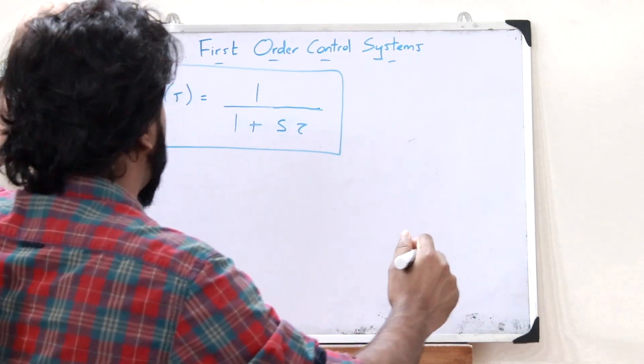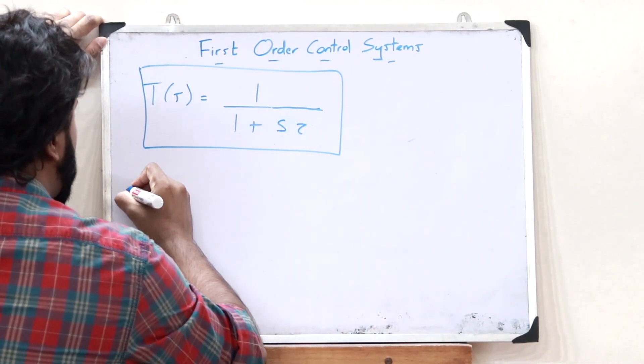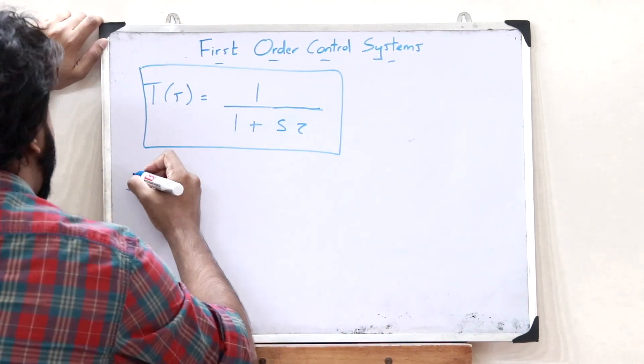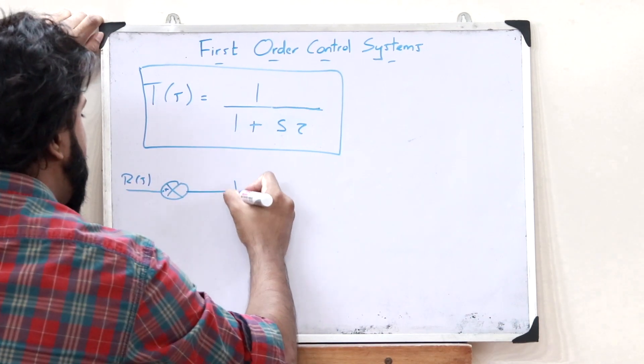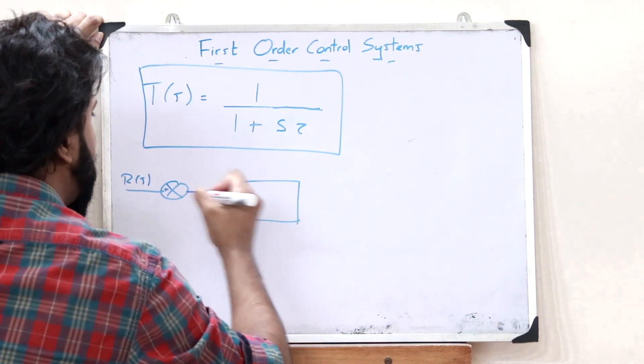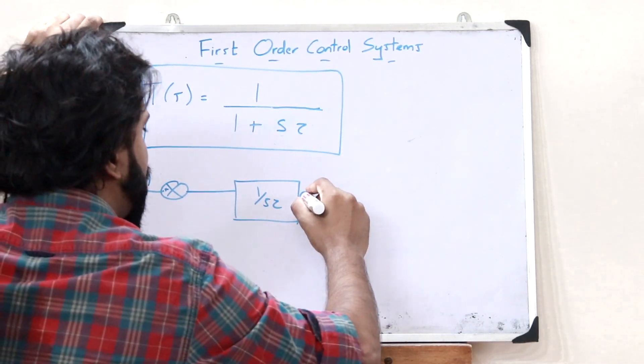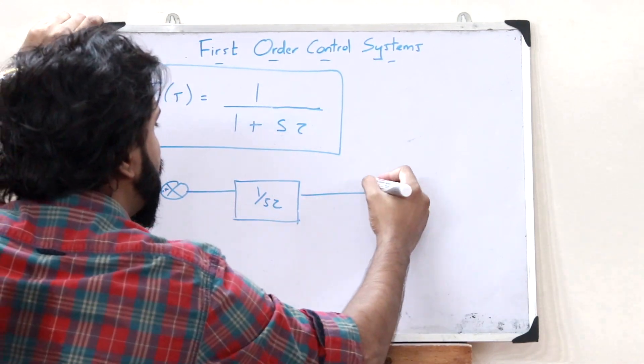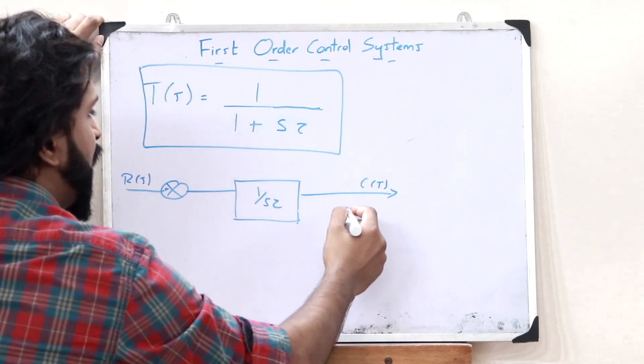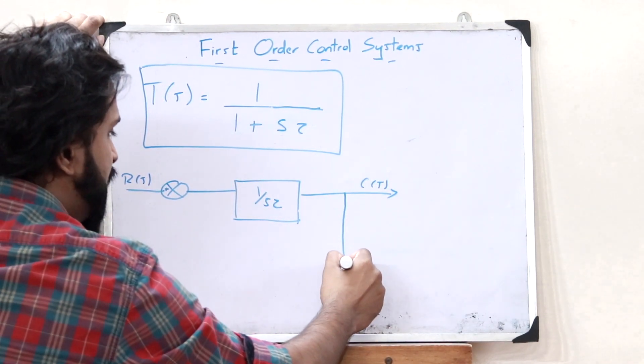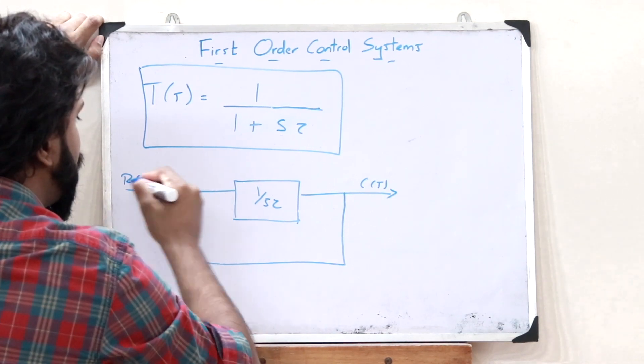A first-order control system can be represented like this. Here, we would have a particular input R of S. And now, here, it has got a forward gain. So, let us take the forward gain as 1 divided by S tau. And now, here, we have the output C of S. And now, let us provide a unit negative feedback like this.